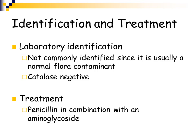Lactobacillus is not commonly identified in the lab because it is usually not the cause of infection — it is more commonly a contaminant in female genital or urine specimens. The organism is catalase negative with the pleomorphic morphology described. You will see this organism in the clinical lab, but will very rarely speciate it or perform biochemical tests because it is normal flora. In the rare case of infection, treatment is penicillin combined with an aminoglycoside agent.